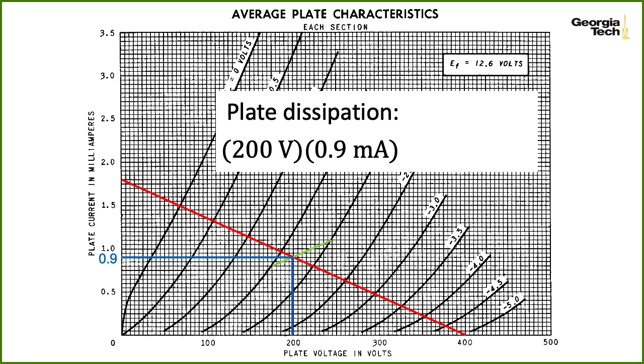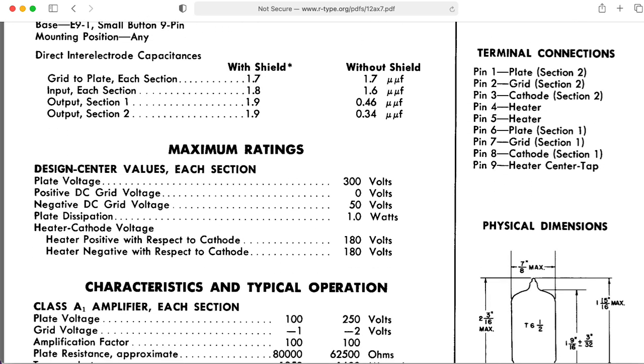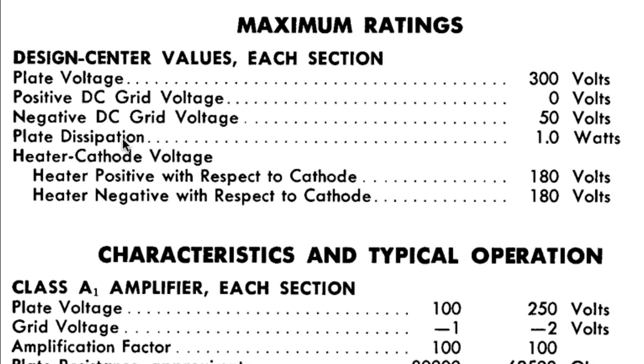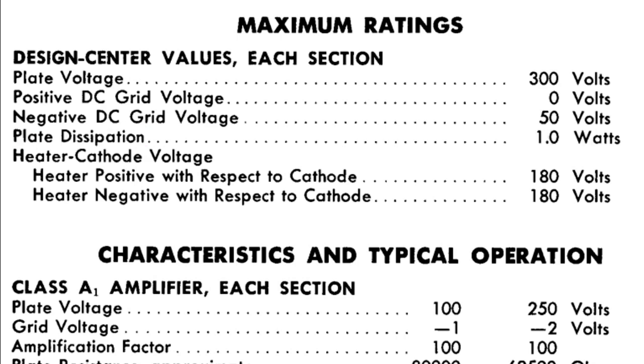So before we end this lecture, I would like to compute the plate dissipation. So this is a power that we compute by multiplying the plate-to-cathode voltage at the quiescent operating point with the quiescent current. So that's 200 volts times 0.9 milliamps as estimated on this chart. I believe that the exact computation according to what's on the schematic is a little less than 200 volts, but this is close enough. And if we compute this, we wind up with 180 milliwatts. And taking a look at the 12AX7 datasheet, we see that we have a maximum plate dissipation of one watt. So 180 milliwatts is much less than one watt, so we're safe.